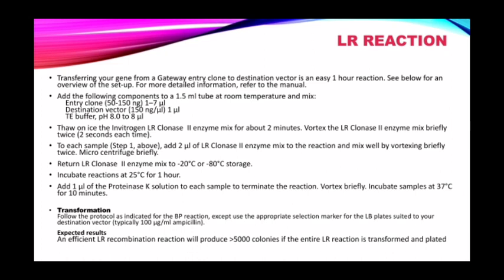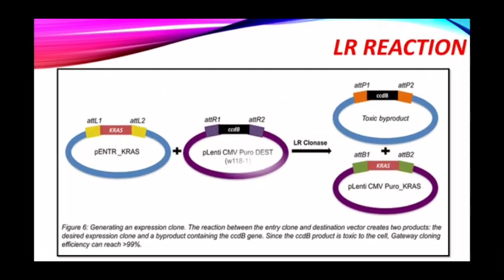After transformation, we will get the expected result: the LR recombination reaction will produce more than 5,000 colonies if the entire LR reaction is transformed and plated. In the diagrammatic representation of the LR reaction, you can see the entry clone (first product of the BP reaction) combined with the destination vector. With the help of LR clonase enzyme, we get the final products: the desired expression clone and a by-product.